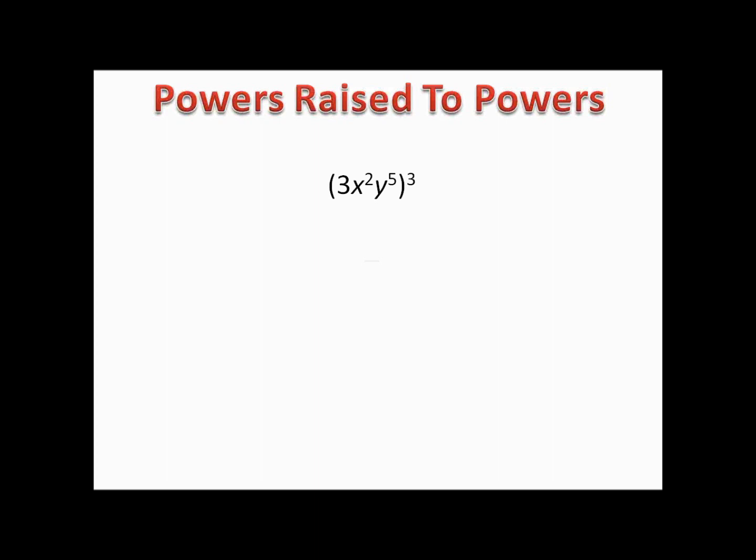We've seen how to work with expressions involving exponents. How about something like (3x²y⁵)³? To the third power means multiplying 3x²y⁵ by itself three times: 3×3×3 is 27, x²×x²×x² is x⁶, and y⁵×y⁵×y⁵ is y¹⁵. But suppose it was everything to the 50th power or the 100th power?